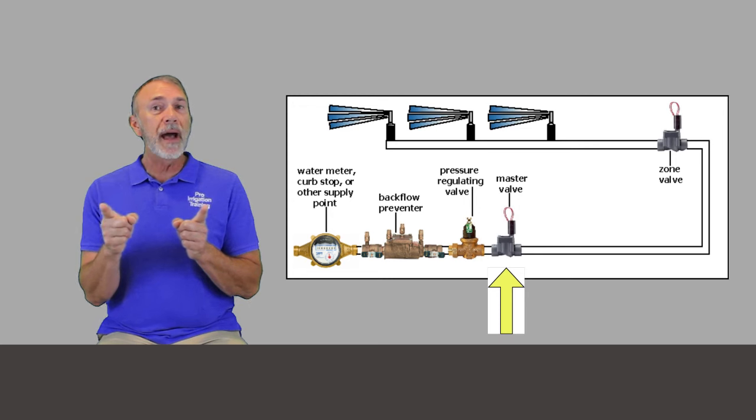Your typical irrigation timer should have enough voltage, enough amperage to open up two or maybe even three valves at once. So you have your zone valve, but you can also put a master valve at the very beginning of the system so that when it's time, let's say it's 6 a.m. on Monday and it's time for the irrigation system to run, it turns on valve number one, but it also turns on the master valve and opens up so the entire system can be pressurized and run.